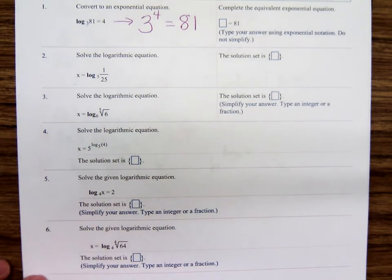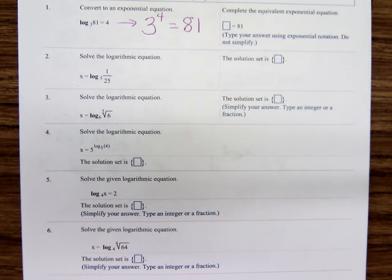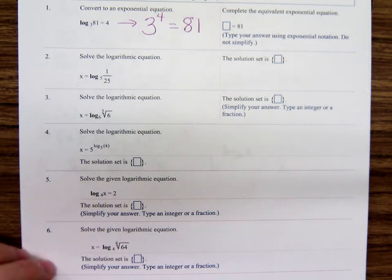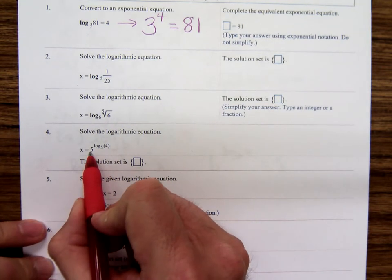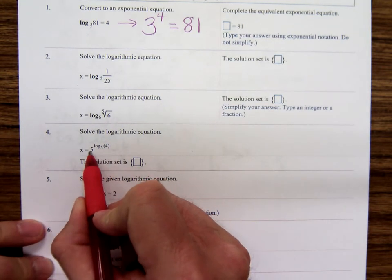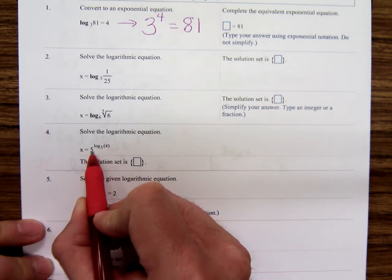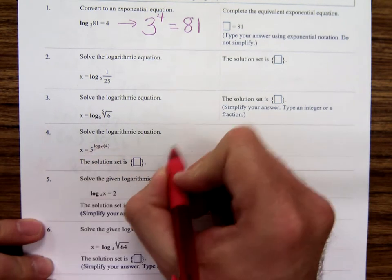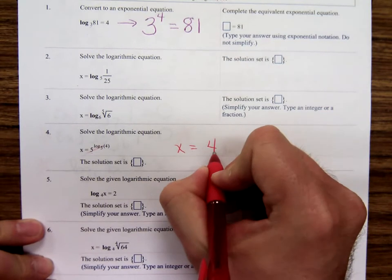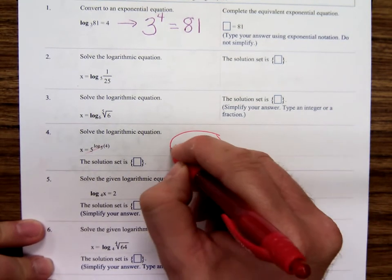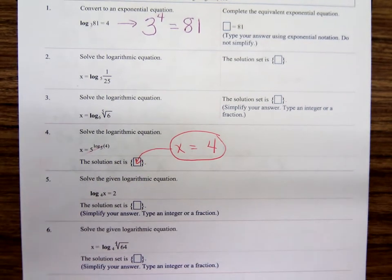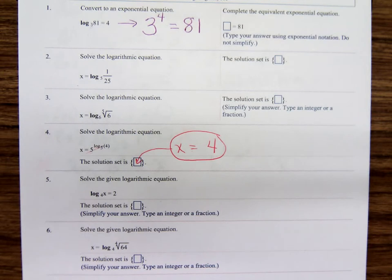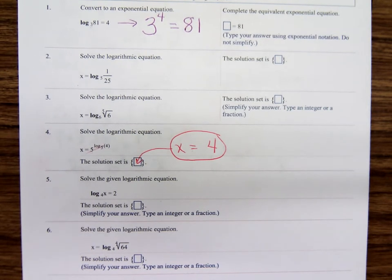If we jump down to number 4, right here, 5 raised to the log base 5 of 4. Because these numbers, this number here and that number here are the same, those cancel each other out and we're just left with x equals 4. Can y'all see that? Or do I need to zoom it in? Well, I guess that's okay.